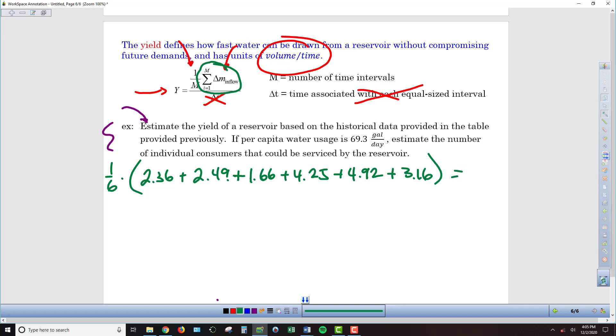And so then eventually we end up with an average here of 3.14. Now we should note that that was all times 10 to the 9th, so 3.14 billion cubic feet. And that is per month.